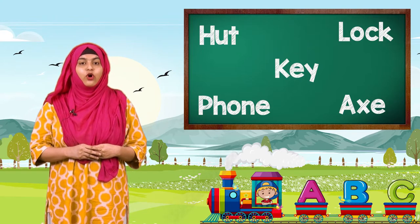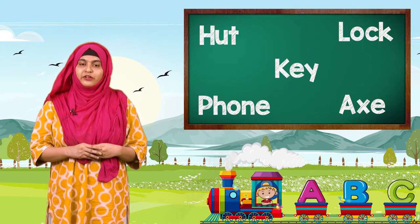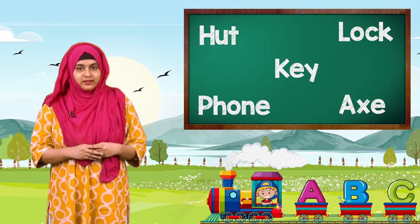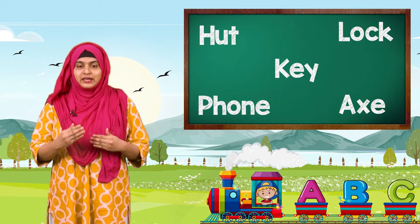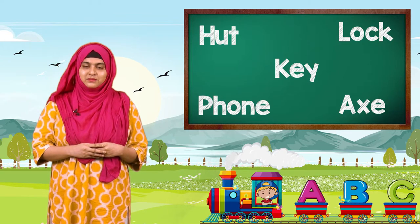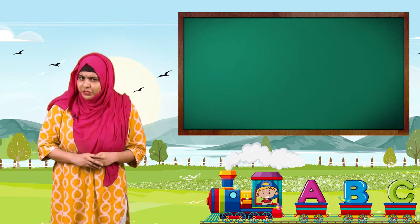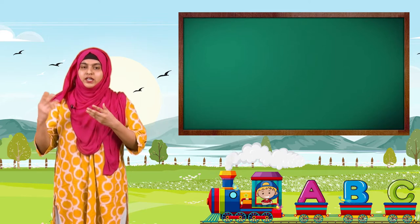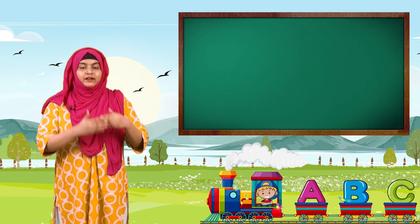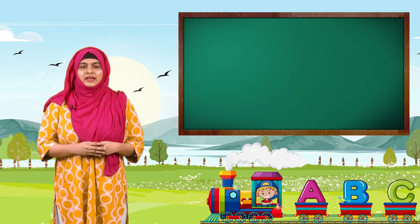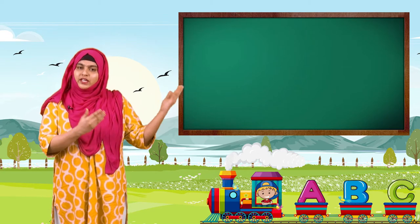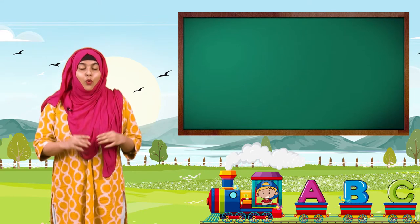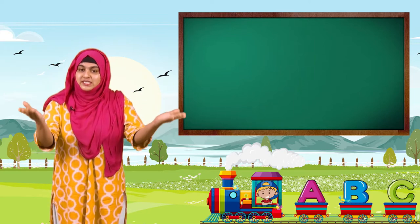These were the odd men out because they began with different letters. Children, have you ever seen a computer? What are the parts a computer has? It has a keyboard, a monitor, and a CPU. Now let us do an activity on the keyboard. Do you know what the keyboard does? Whatever we type on the keyboard gets shown on the screen.